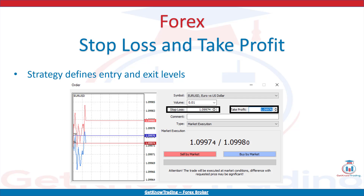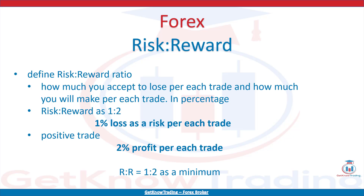Risk-to-reward ratio is one of the most important steps in the compounding plan strategy. Risk-to-reward ratio defines how much you accept to lose per each trade and how much you will make per each trade, in percentage. If you define risk-to-reward as 1 against 2 with 1% risk, that means you plan to lose 1% on a bad trade. If the trade is positive, you would make 2% of profit. You should plan to have at least risk-to-reward equal to 1 against 2 as a minimum. If you put 1 against 3, each positive trade gives you 3% of profit.